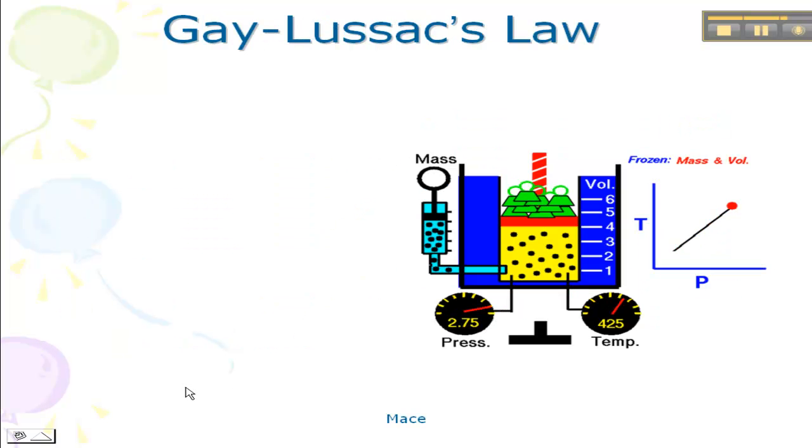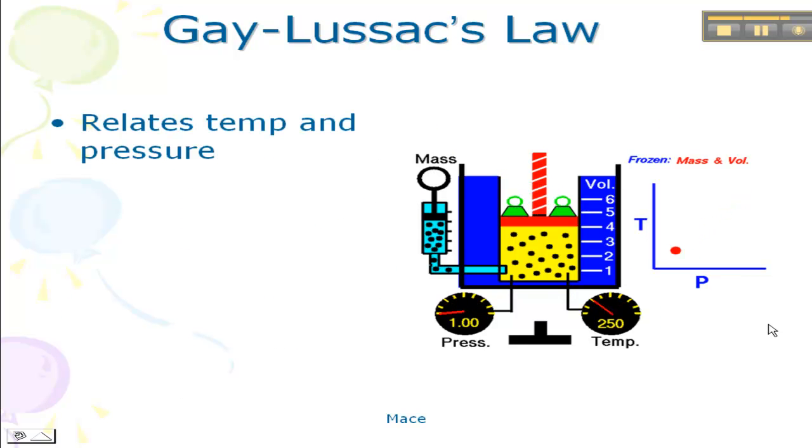The third one is the Gay-Lussac's Law. This relates pressure and temperature. So your volume is constant and so is your mass. So as we increase our pressure from 1 to 3, our temperature is going to increase from 250 to 450. And notice we have the same straight line graph.